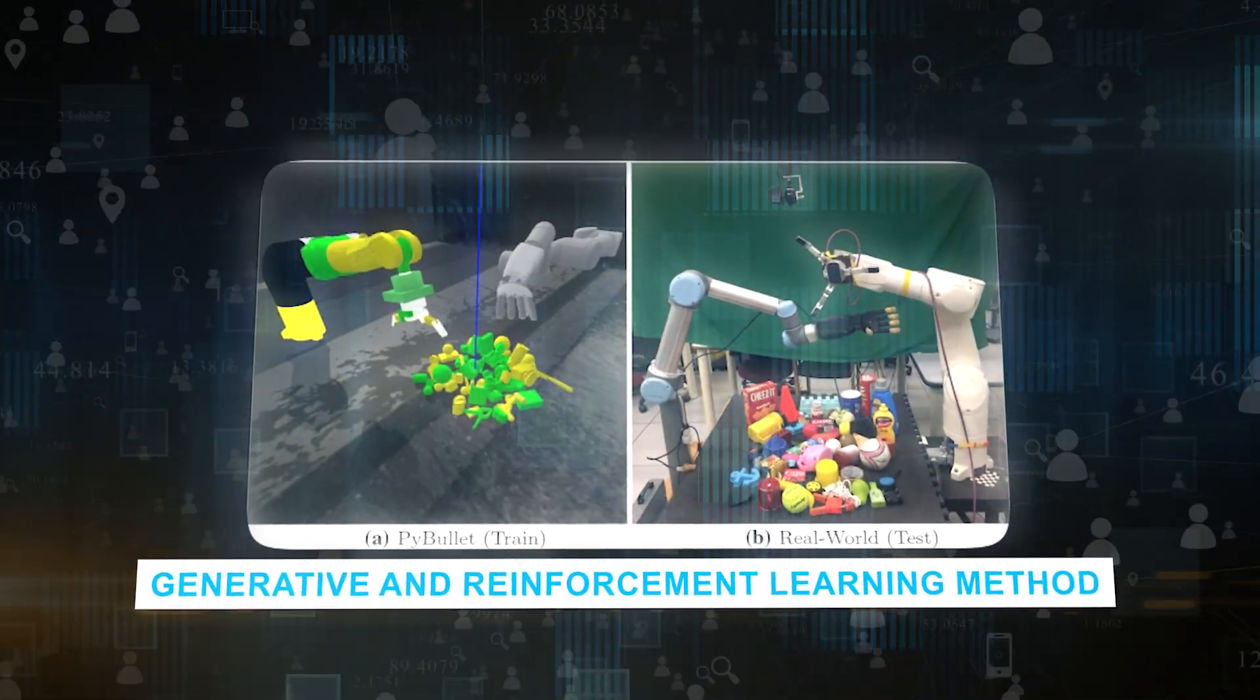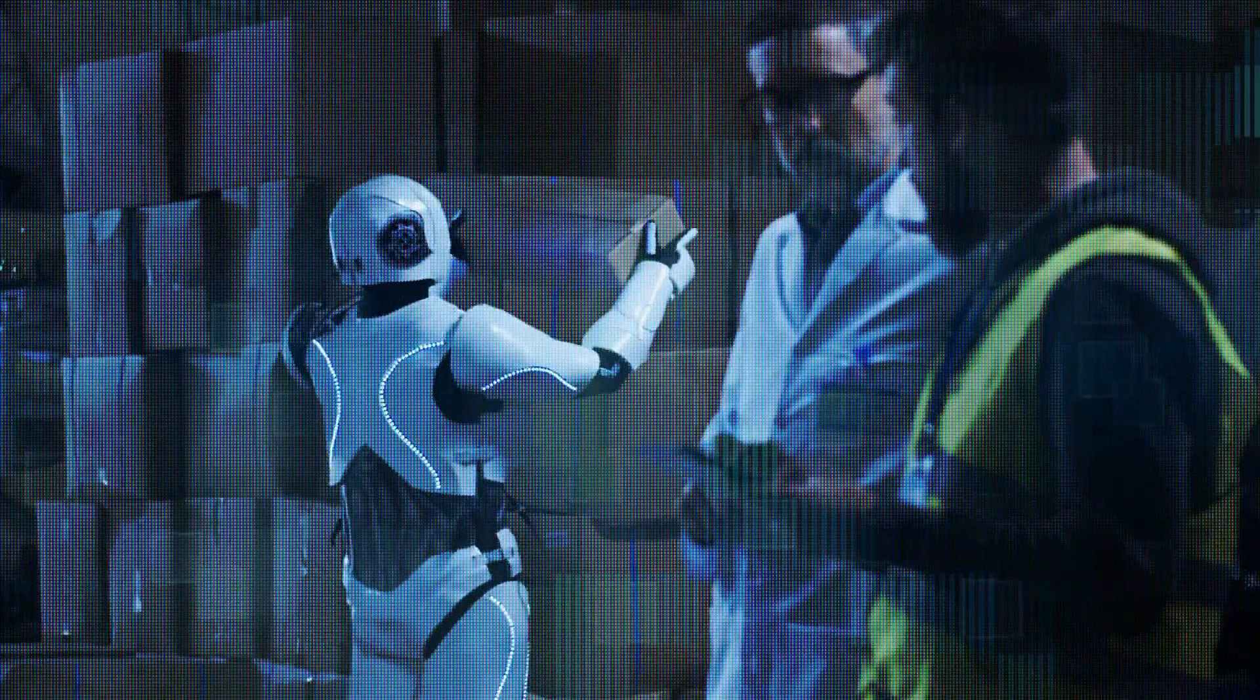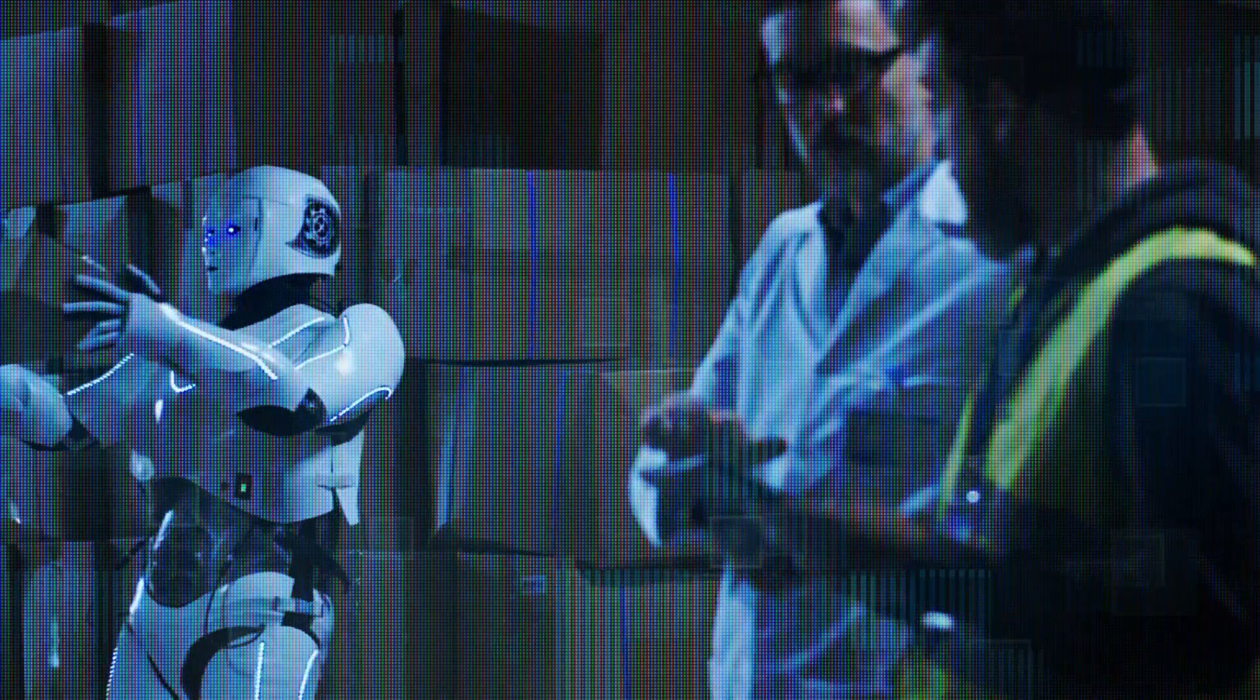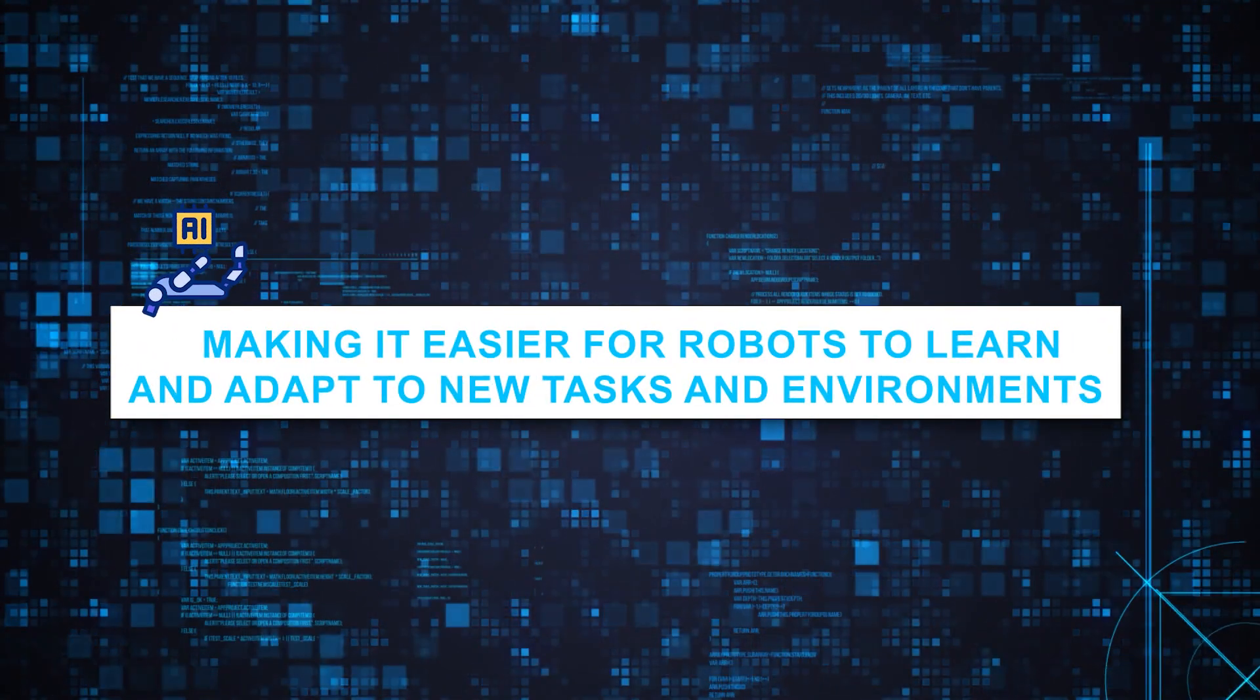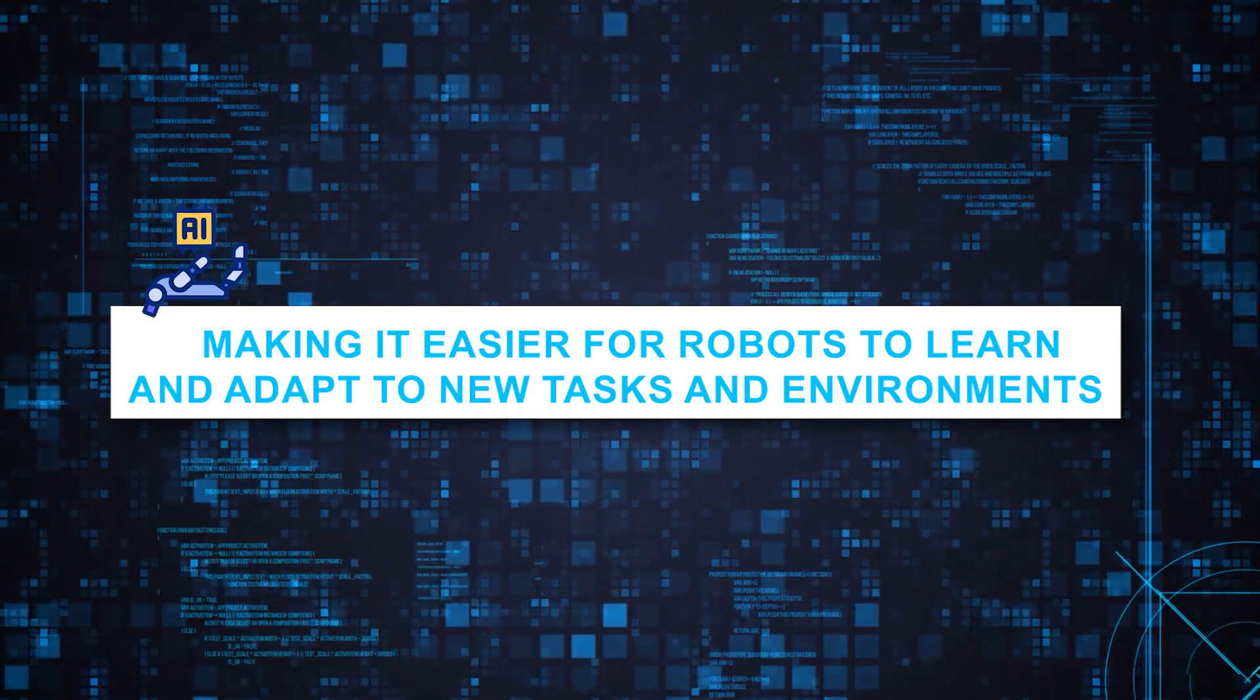The implications of Eureka for robotics are promising. It could change the way we interact with robots and machines. The integration of generative and reinforcement learning methods offers a bright future for AI-robotic synergy, making it easier for robots to learn and adapt to new tasks and environments.